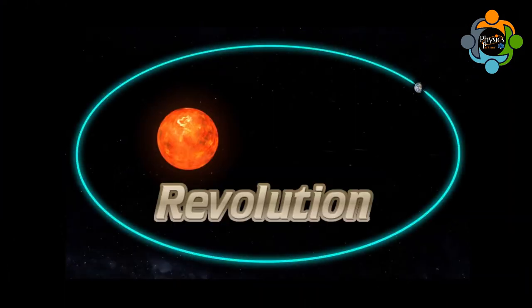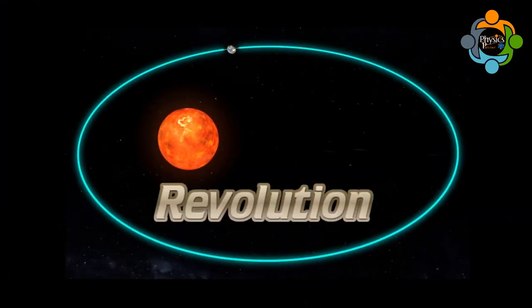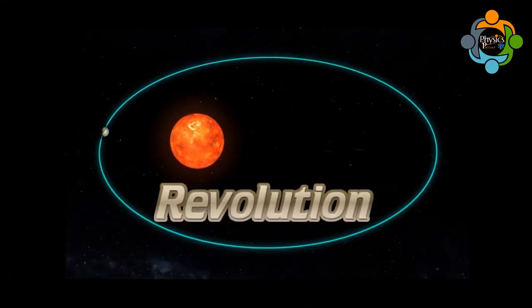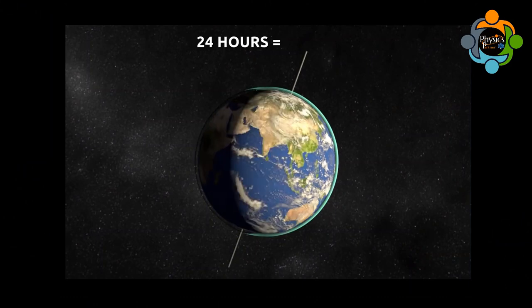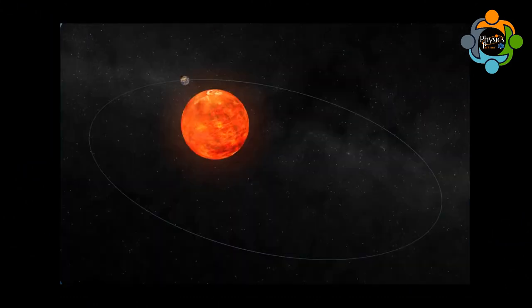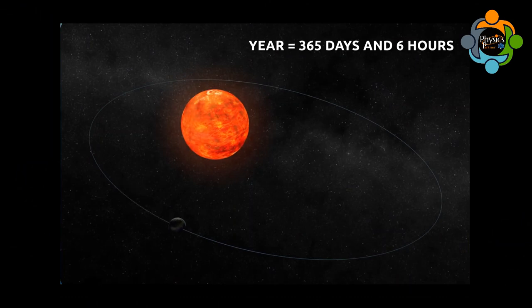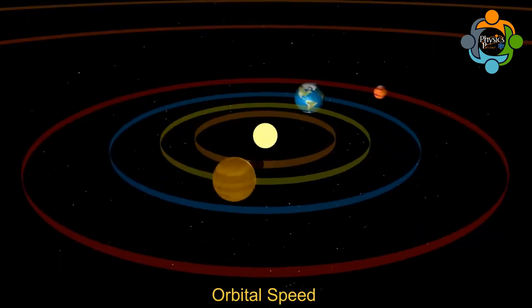For example, Earth rotates on its own axis, producing the 24-hour day. Earth revolves around the sun, producing the 365-day year.